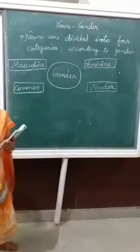Common gender means it refers to either male or female. For example, teacher — both male and female can be a teacher. Doctor — both male and female. That is a common gender.